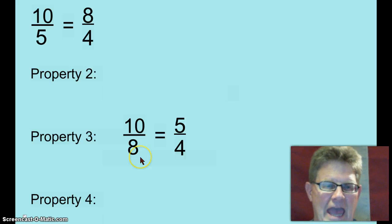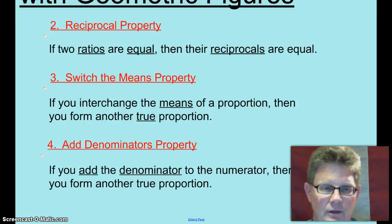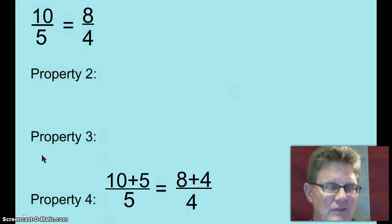Let's go back and look at the fourth property. Property four, add denominators property. If you add the denominator to the numerator, then you form another true proportion. Ten over five equals eight over four. Well ten plus five over five, I added the denominator to the numerator. Equals eight plus four over four. I again added the denominator to the numerator. That would be fifteen over five, three over one, twelve over four, three over one. It makes another true proportion. It's cool how these properties work.